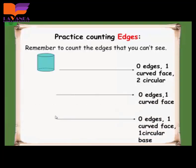The cylinder has 0 edges, 1 curved face, and 2 circular bases. The sphere has 0 edges, 0 corners, and 1 curved face. The cone has 1 curved face, 0 edges, and 1 circular base — its base looks like a circle. The cylinder also has 2 bases that look like circles.